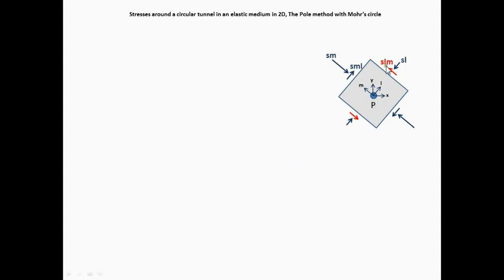To apply the pole method, the stresses at a point P together with the orientation of the planes at which they are acting must be known. Let's assume we know the stresses and their orientations at a point P according to this infinitesimal element shown. This element is rotated at an angle of 50 degrees with respect to the horizontal x-axis. To find the pole, the procedure is as follows.